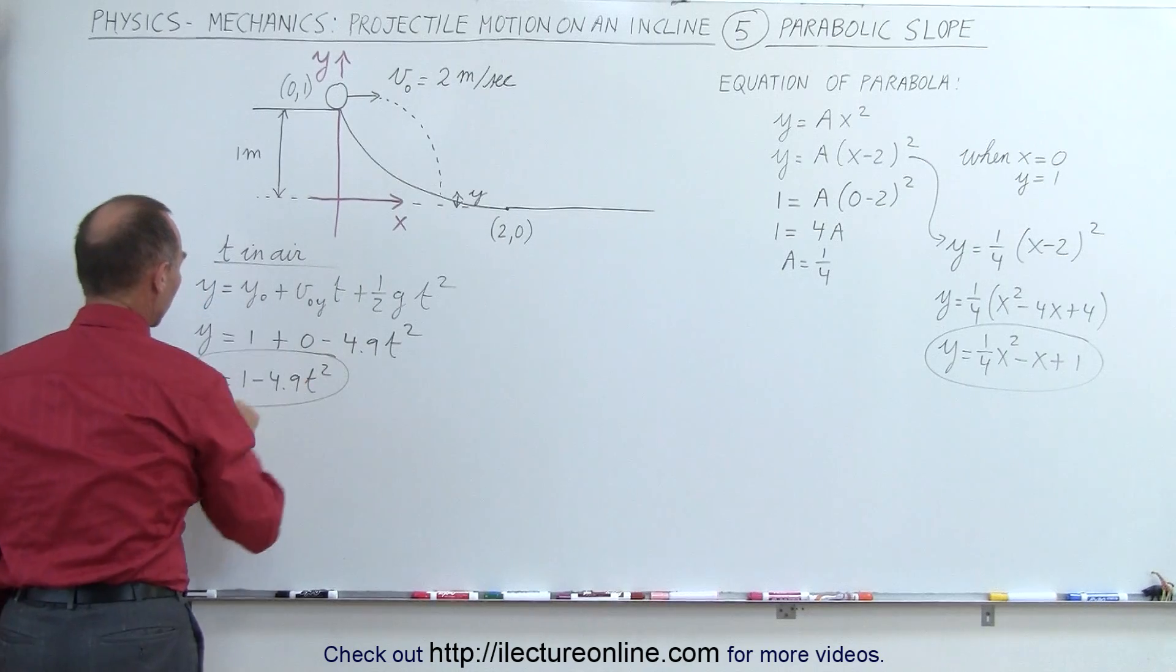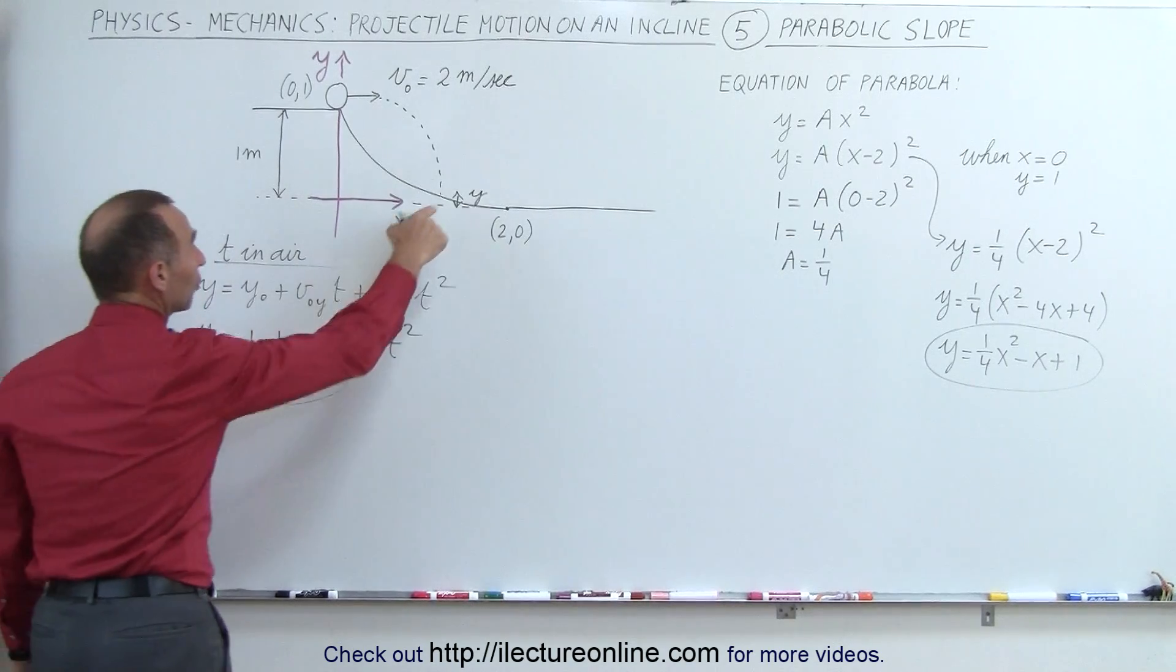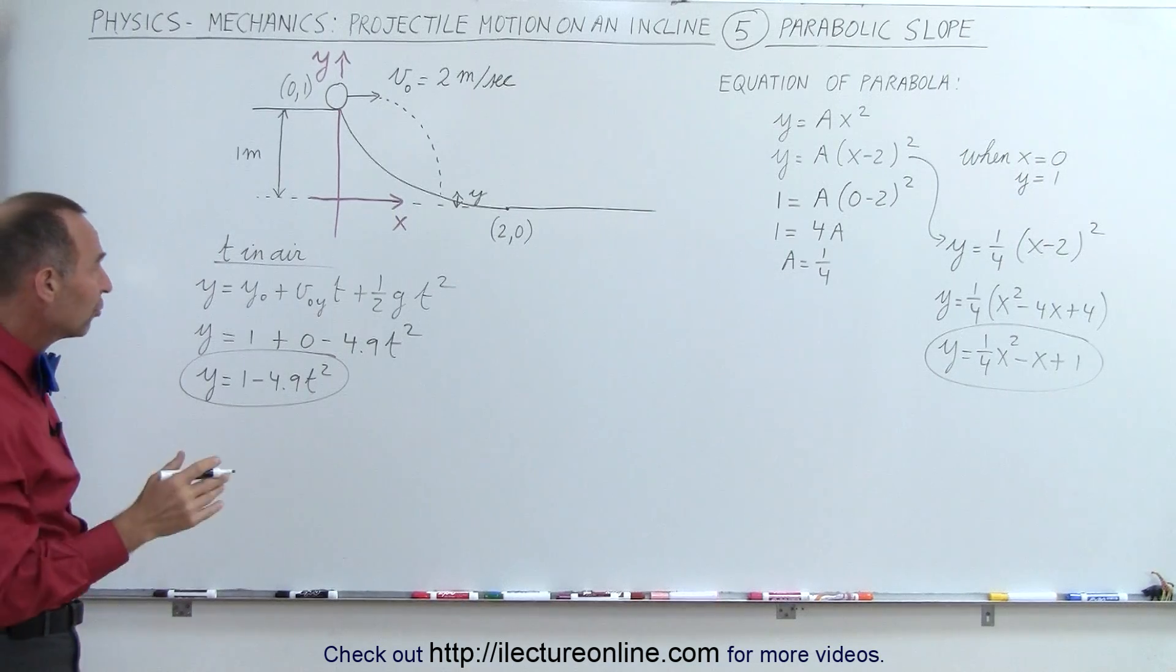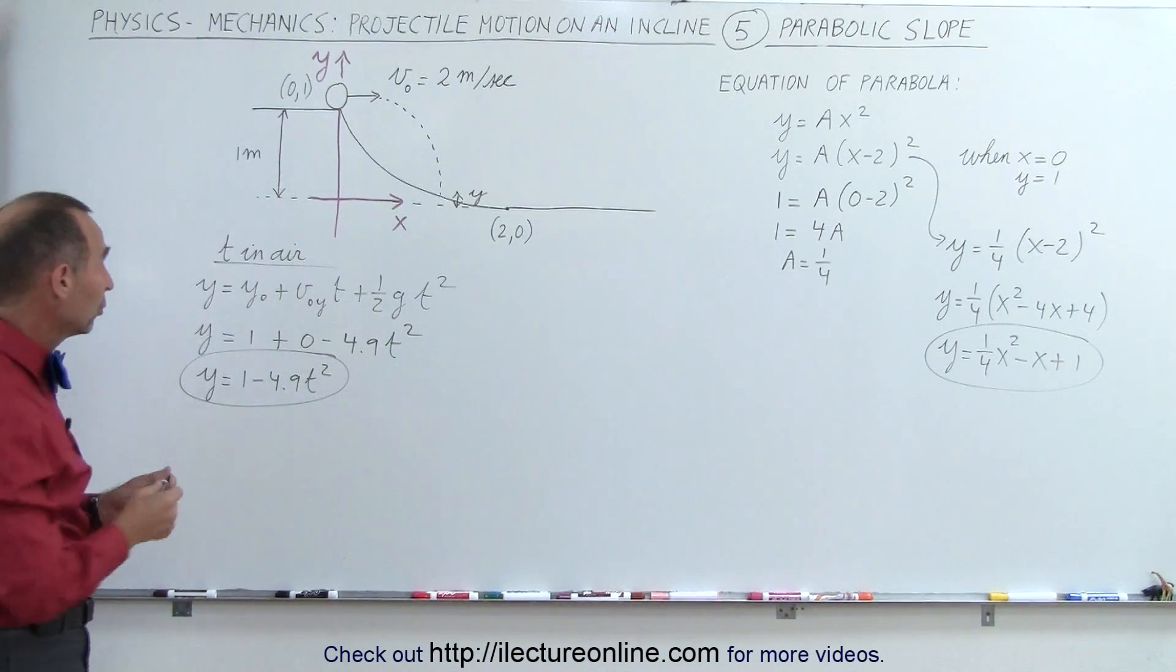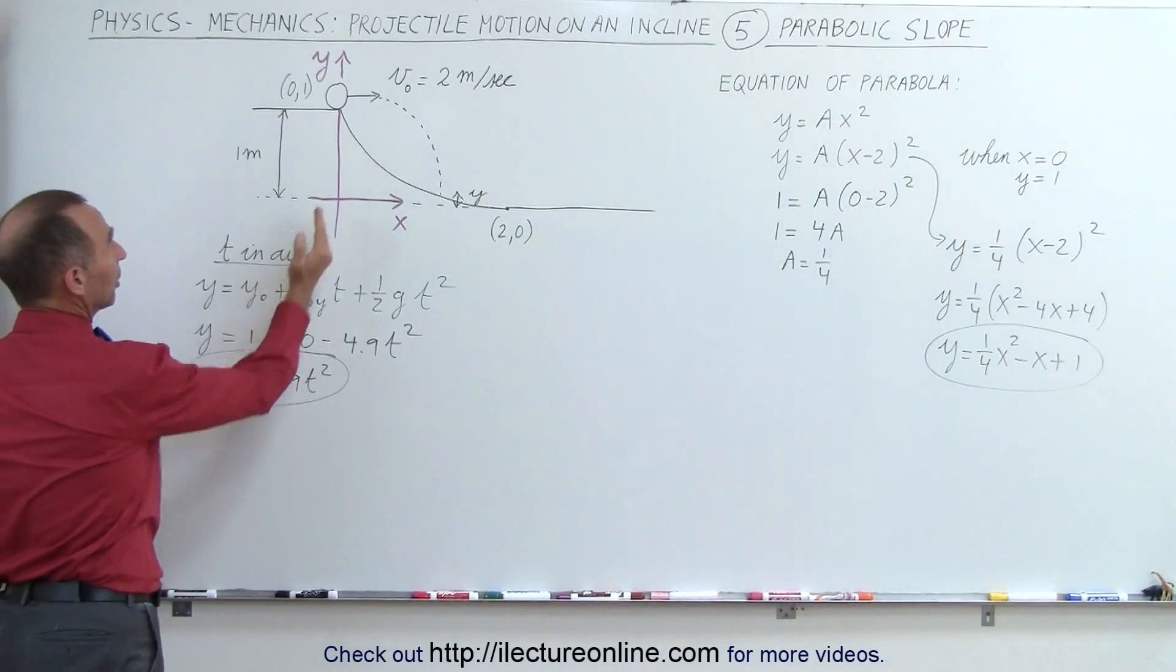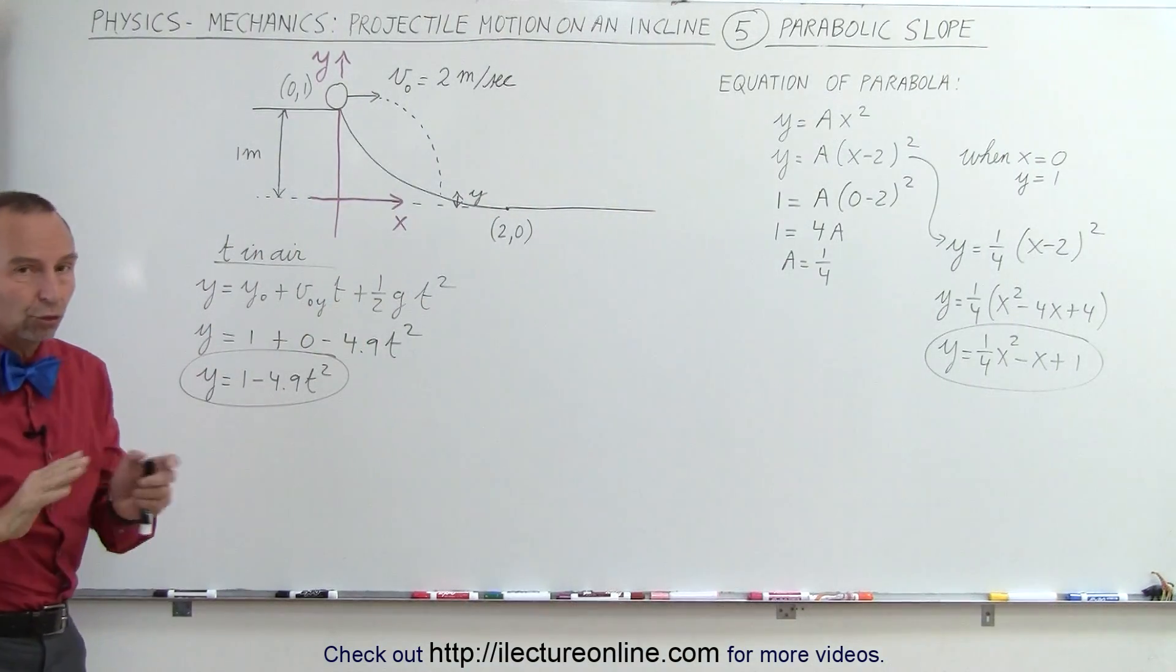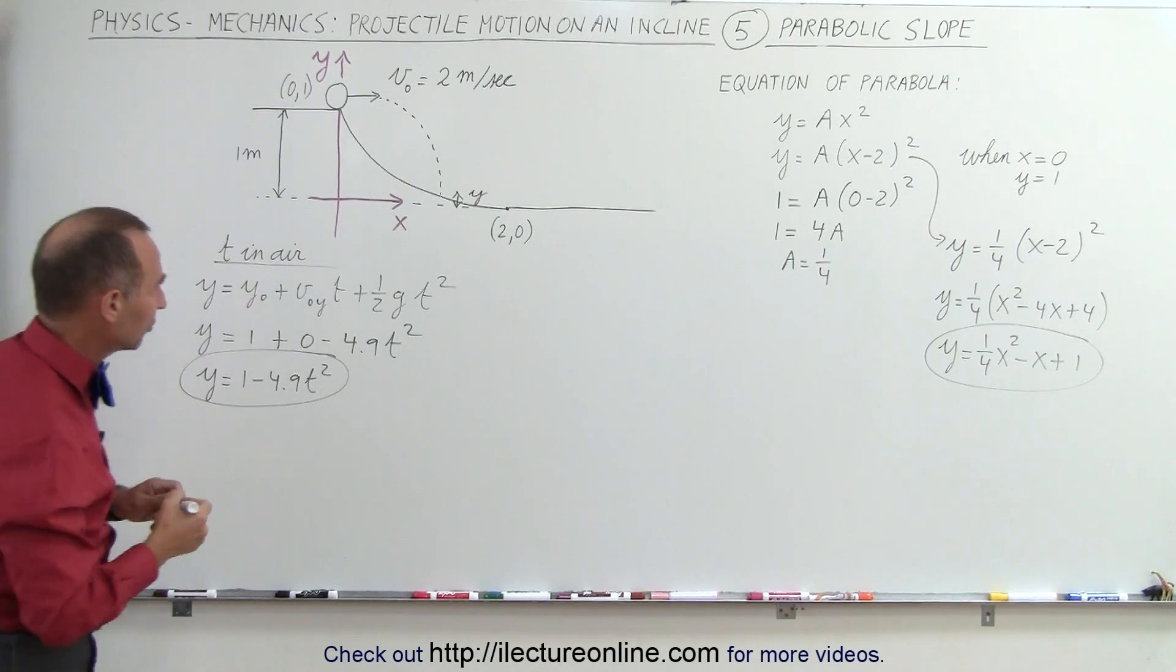So there's the equation that relates y, the final place where it lands, to time. Now let's do the same for the x direction. Of course, in the x direction, we're not going to have an x sub naught term because we start at x equals zero. And we don't have an acceleration term because there's no forces in the horizontal direction.